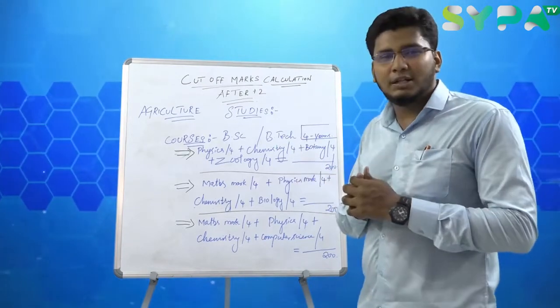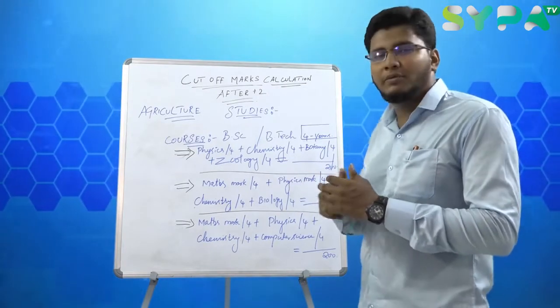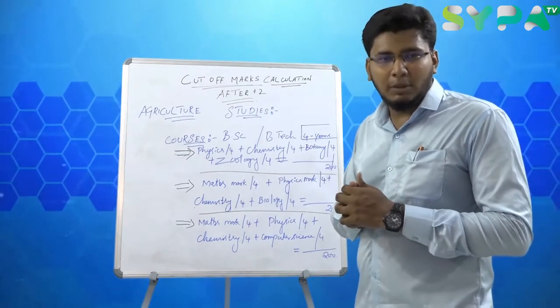Next, for Math Biology students: Math divided by 4, Physics divided by 4, Chemistry divided by 4, Biology divided by 4 equals 200. You can see this is the subject's cutoff mark.